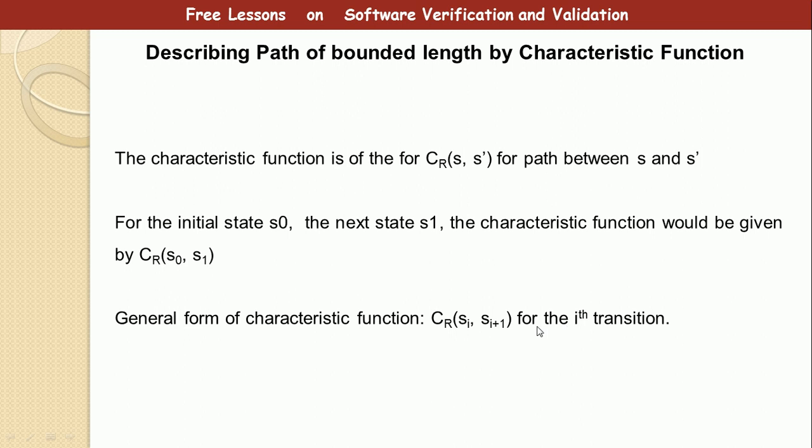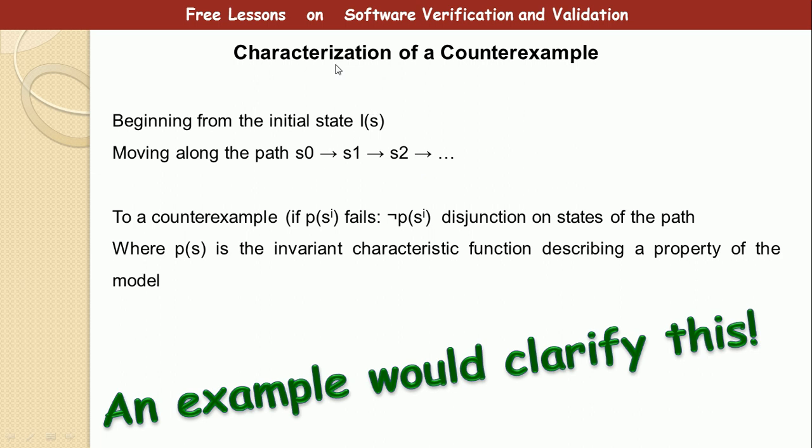I'm sure you get the gist. Now let's look at characterization of counterexamples. Now we move from the beginning s0, s1 until we complete the state space or the model space. We begin from the initial state. Now if the counterexample ψ fails, then there is a disjunction on the states of the path. I'll explain this with the example in the next page. ψ is the invariant characteristic function that describes the property of the model. Don't worry about this. If you don't get it clearly, you'll get it clearly as we move on.